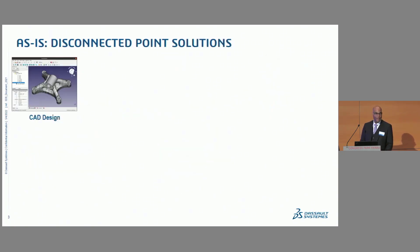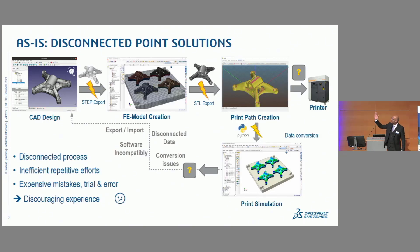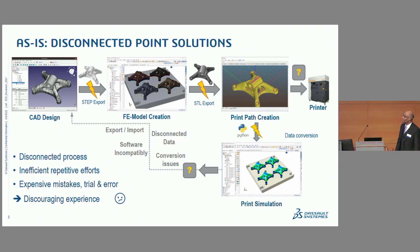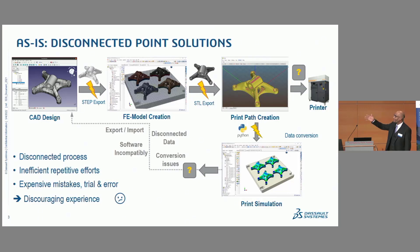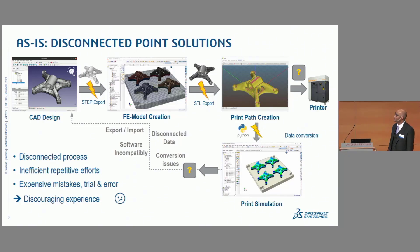So what do we have? As it is — or as we often see it — we have disconnected point solutions. The individual steps go from CAD design, bridging the gap via STEP export, then importing the geometry into an FE generation tool. If you want to create the scan path or print path, you have to go to yet another tool. That often involves importing data through STEP or STL, which may or may not be compatible.